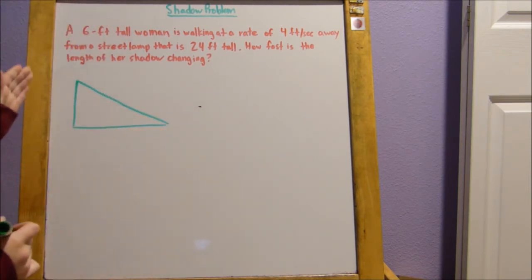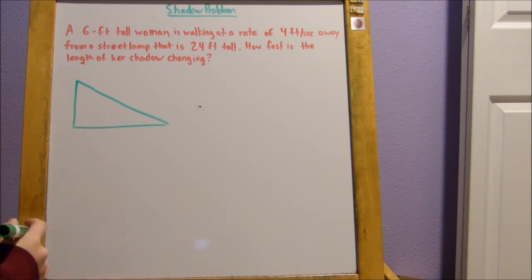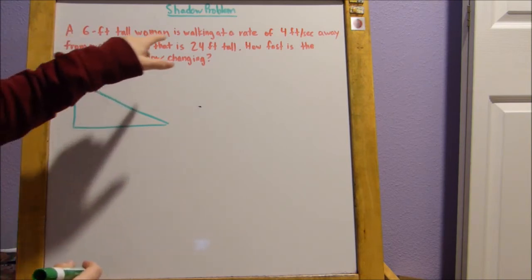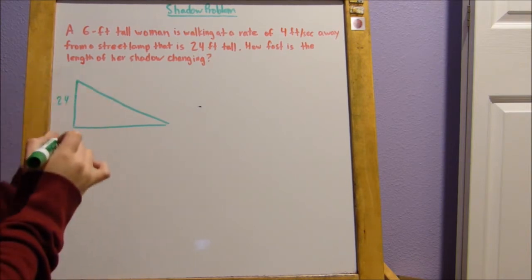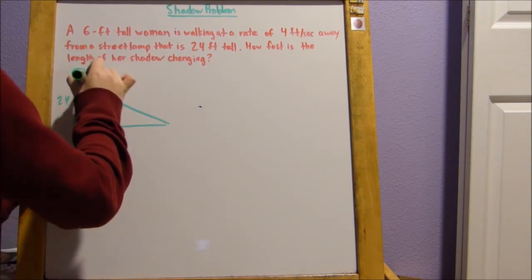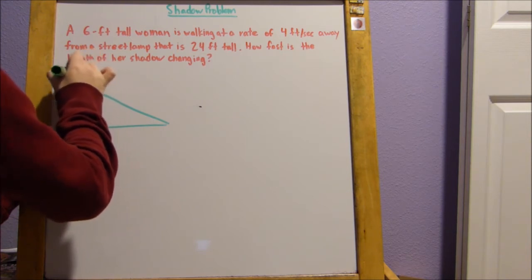Okay, so here's our triangle. So the first thing I notice is that we have a street lamp that is 24 feet tall. So let's label this side length as our street lamp. And here it is, projecting light.